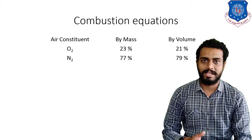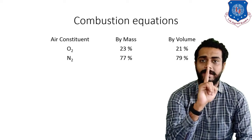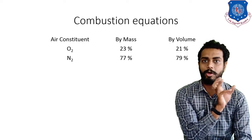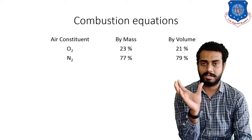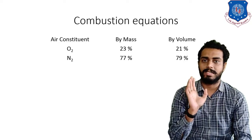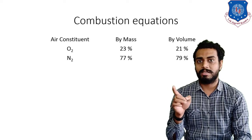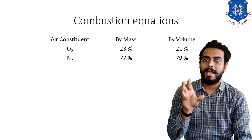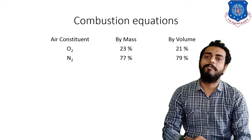Keep these values in mind because they will be helpful in solving examples. If you take 1 kg of air, then 23% — that is 230 grams — will be occupied by oxygen and 770 grams by nitrogen. Similarly, if you take 1 cubic metre of air, then 0.21 cubic metres will be occupied by oxygen and 0.79 cubic metres by nitrogen.